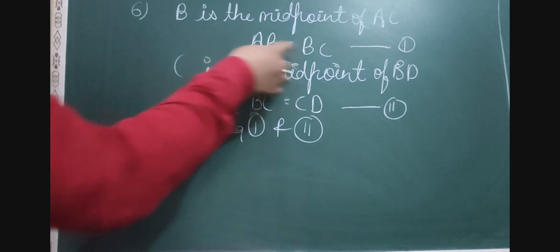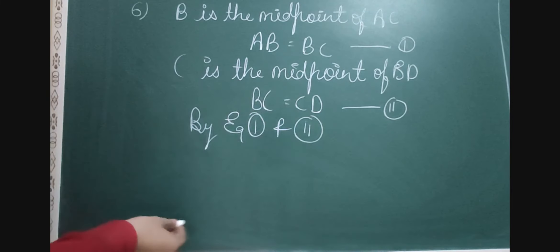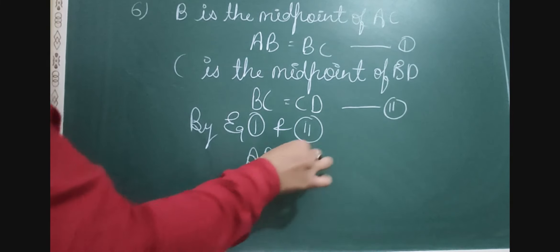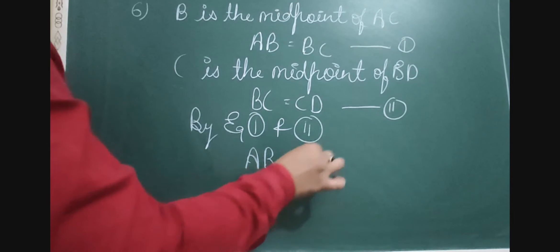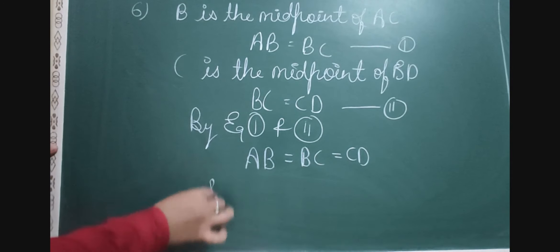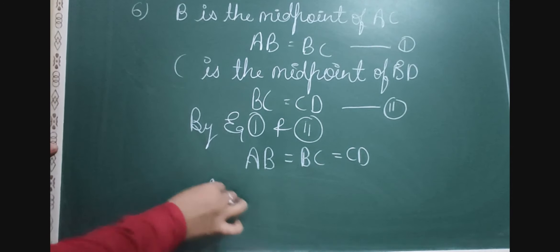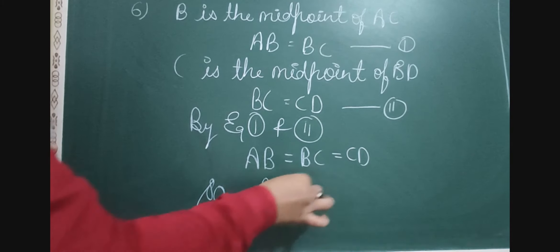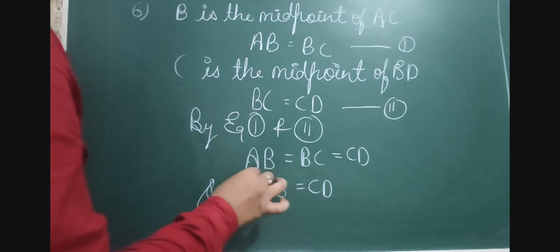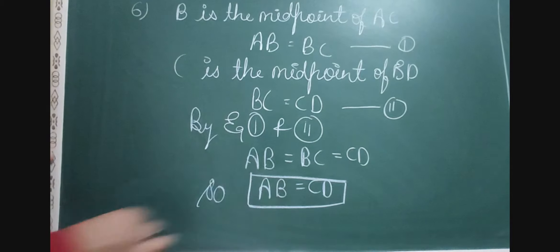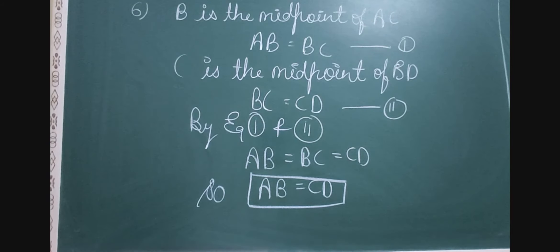Since AB equals BC and BC equals CD, we conclude that AB is equal to CD. Hence it is proved that AB is equal to CD.